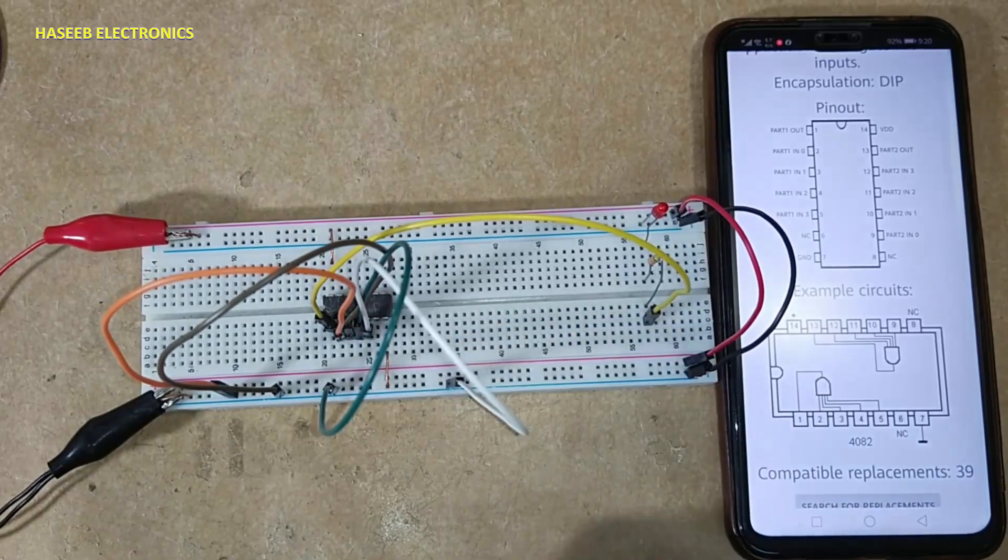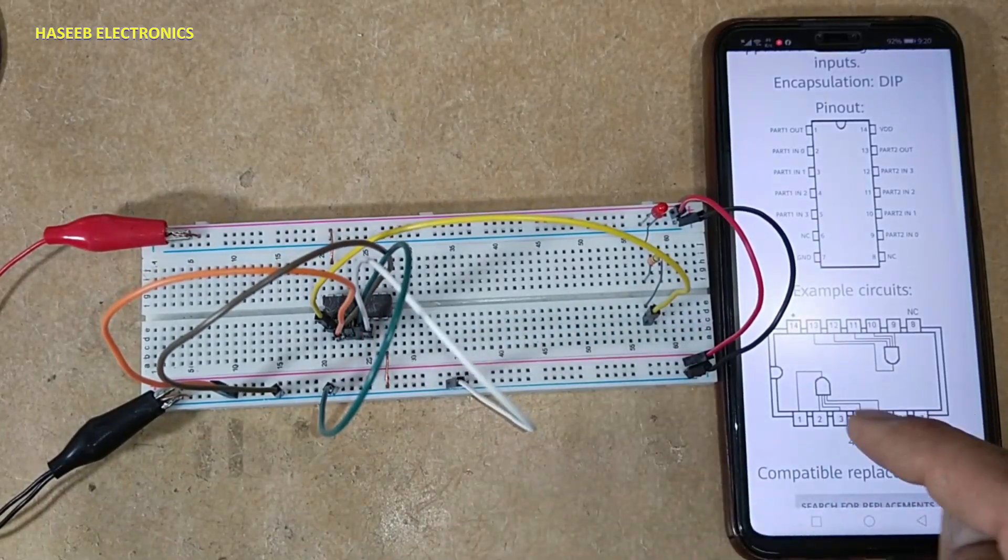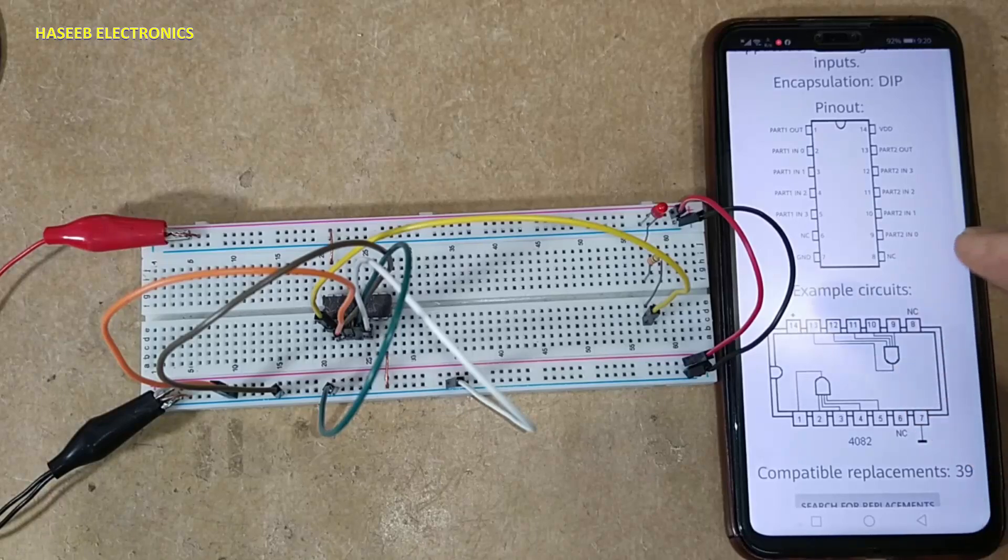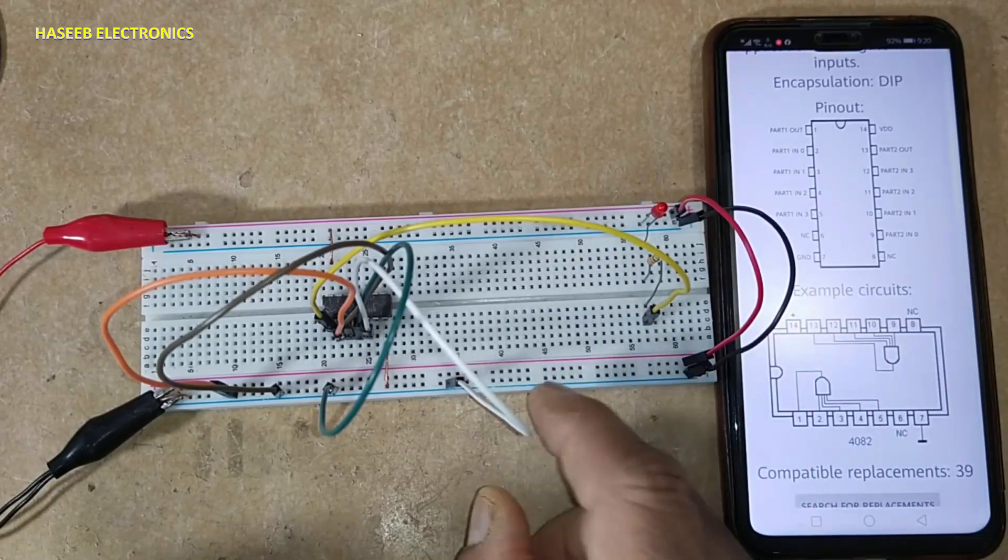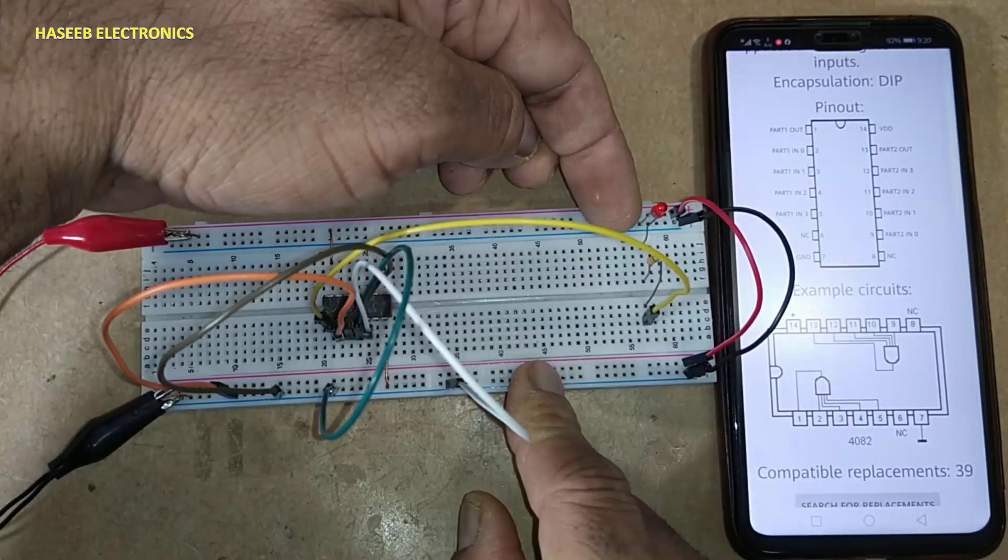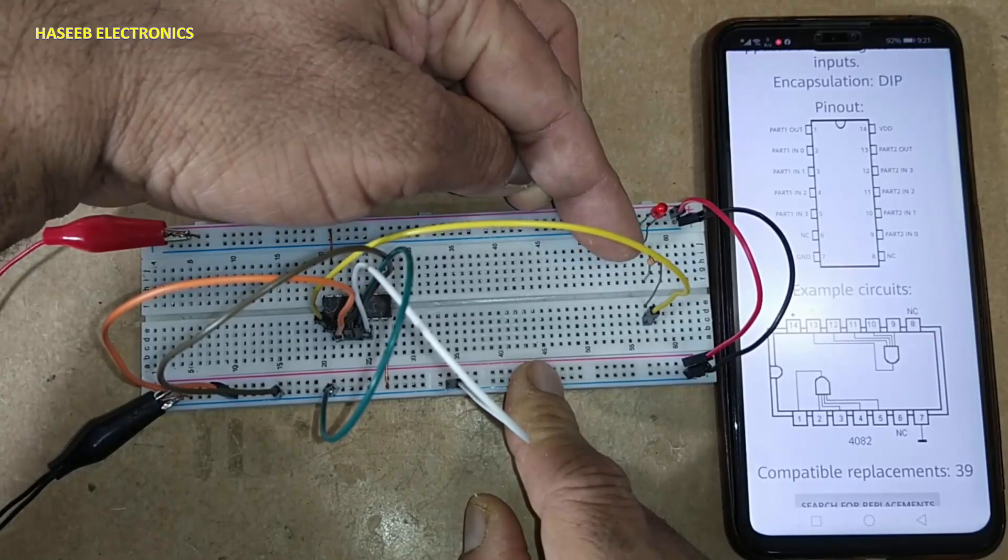All four inputs are low, output is low. I connected LED cathode to ground, 330 ohm resistor at anode, it is connected to pin number one.